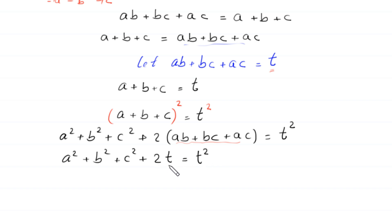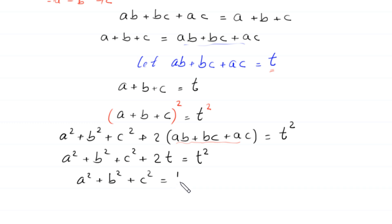We move 2t to the right-hand side. This becomes a² + b² + c² equals t² − 2t. Let's call this equation 4.